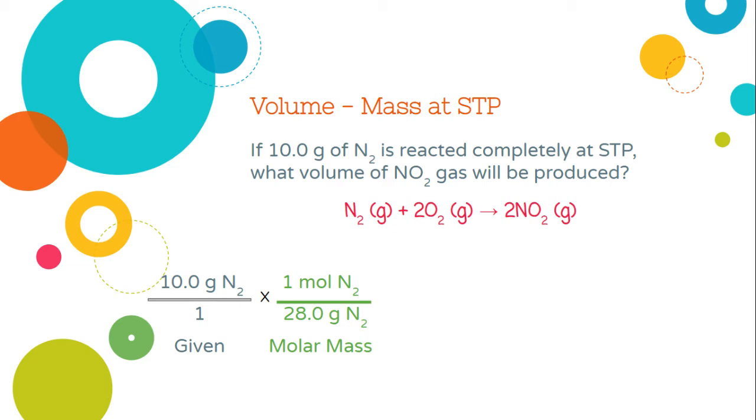I don't want moles of nitrogen. I want volume of nitrogen dioxide gas. So I've still got a few conversion factors to go. Need to get rid of moles of nitrogen. So I'm going to use Avogadro's principle. This is going to turn my moles into liters.